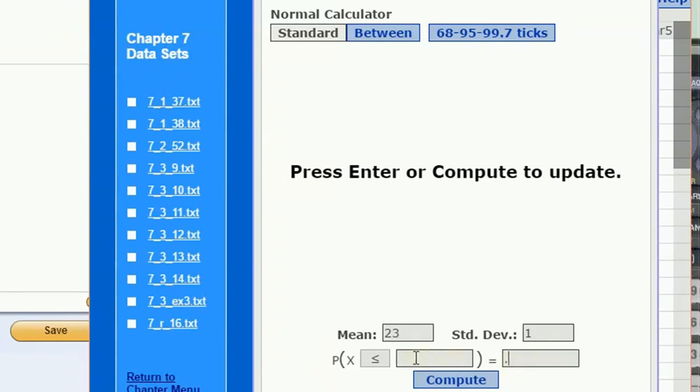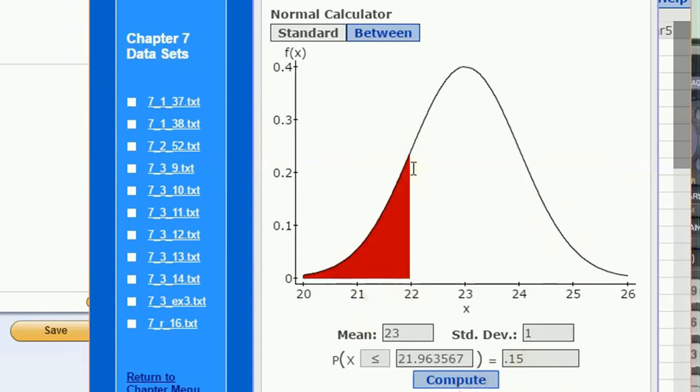Rather than entering into the first box, we're going to enter 15 percent or 0.15 as the probability, and we're going to compute a cutoff of 21.96 such that 15 percent of fertilization or egg incubation times are going to be less than that.